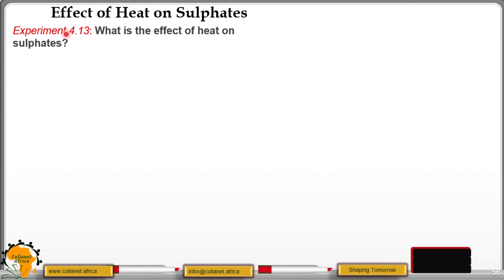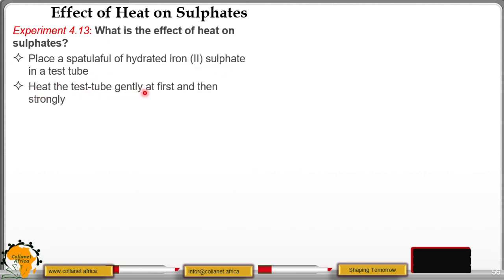Let's look at experiment 4.13. What is the effect of heat on sulfate? This is the procedure. Place a spatula full of hydrated iron(II) sulfate in a test tube. Heat the test tube gently at first and then strongly. Test the gas evolved with moist litmus paper.